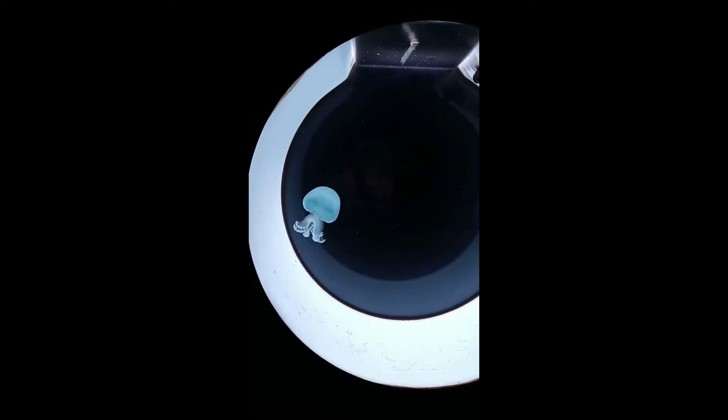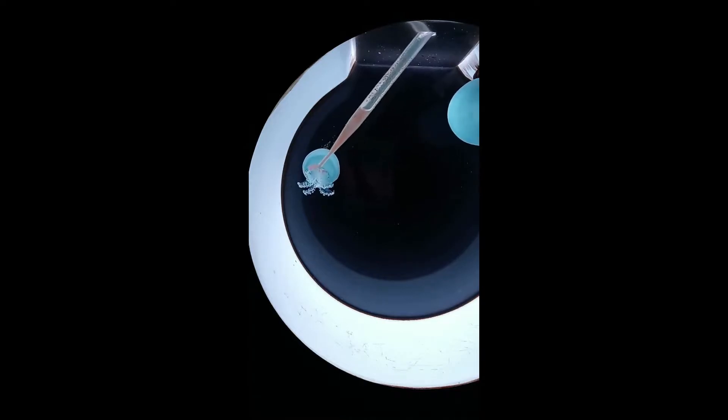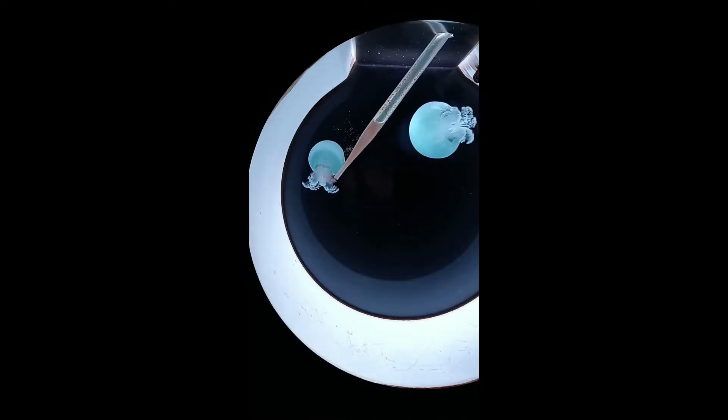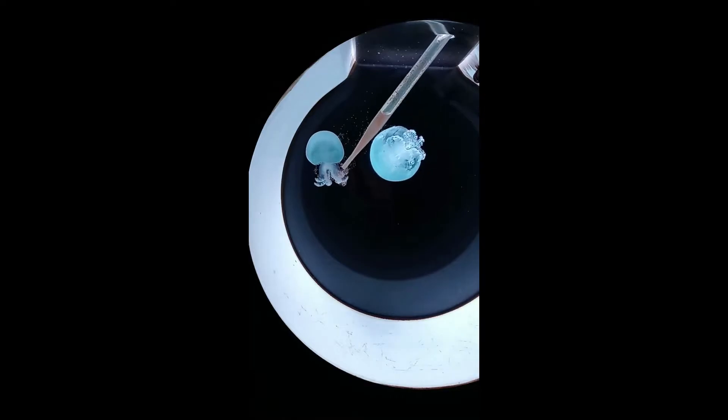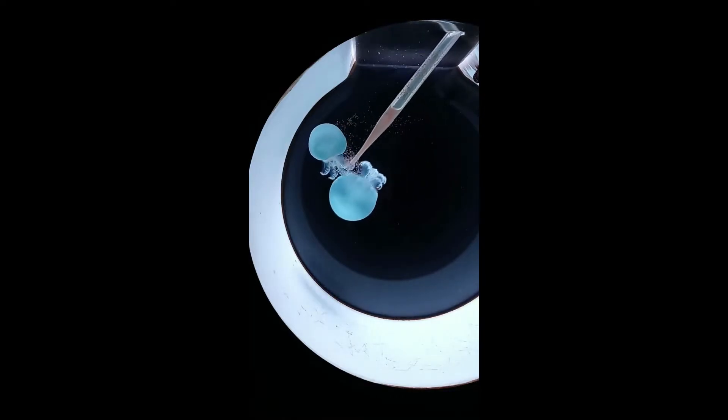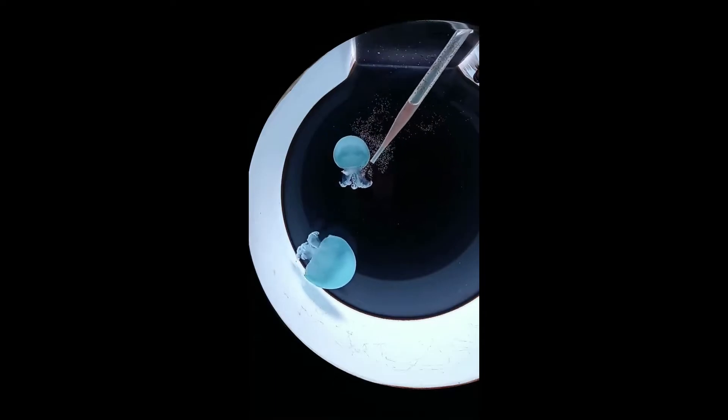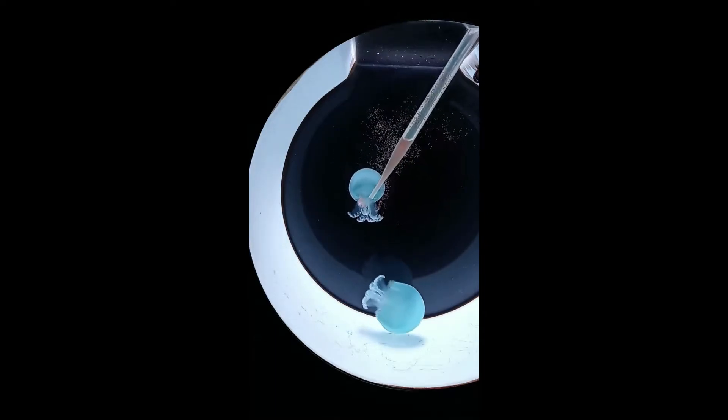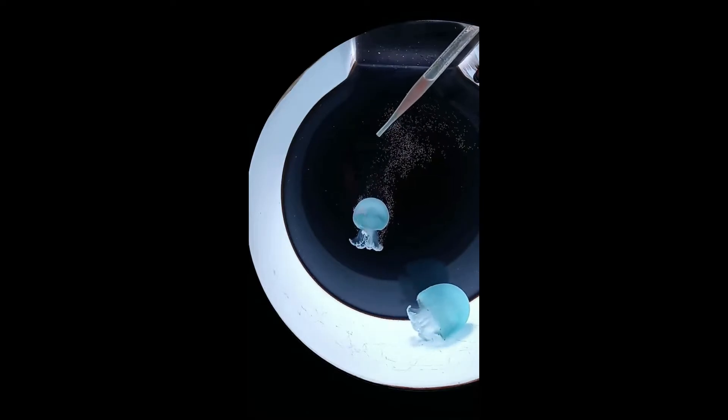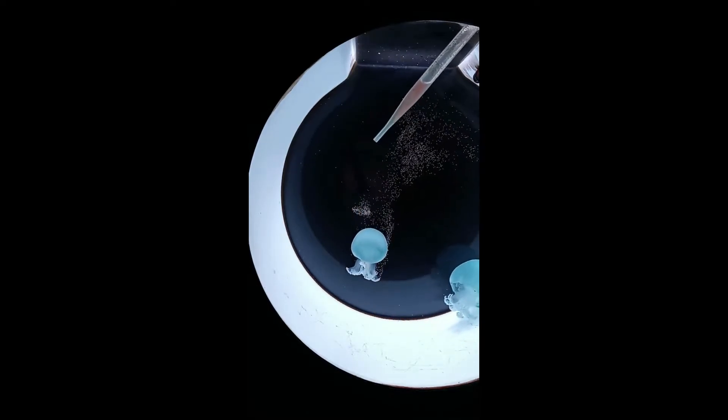We're going to start by putting the pipette into the water and placing it directly on his tentacles. I do move him around just a little bit with a gentle push to make sure I get some on each one. He's going down to the bottom of the tank.